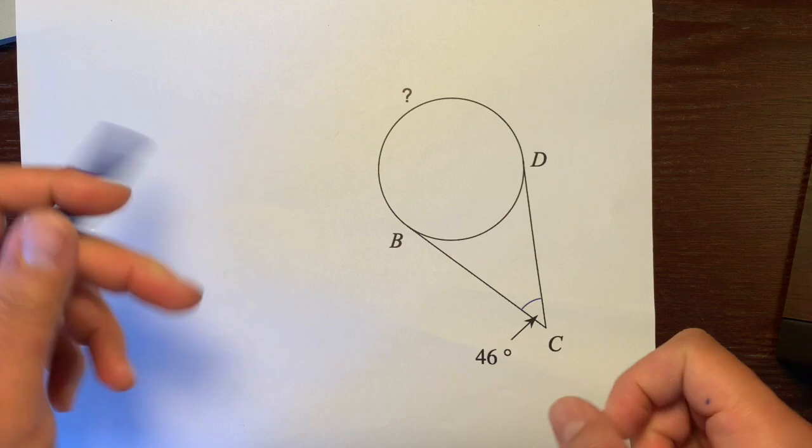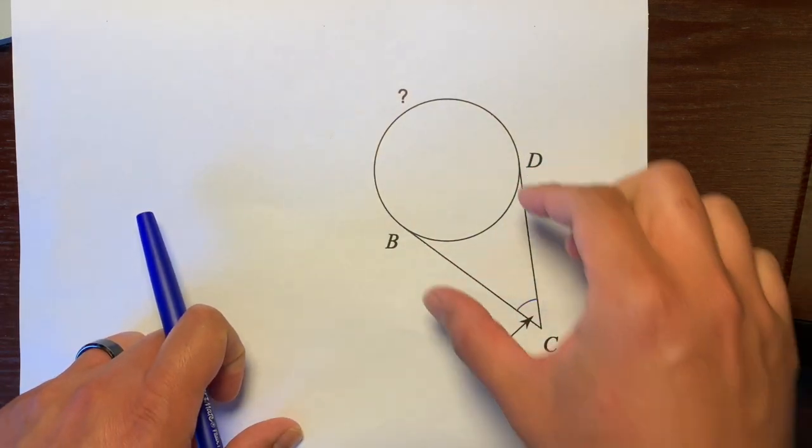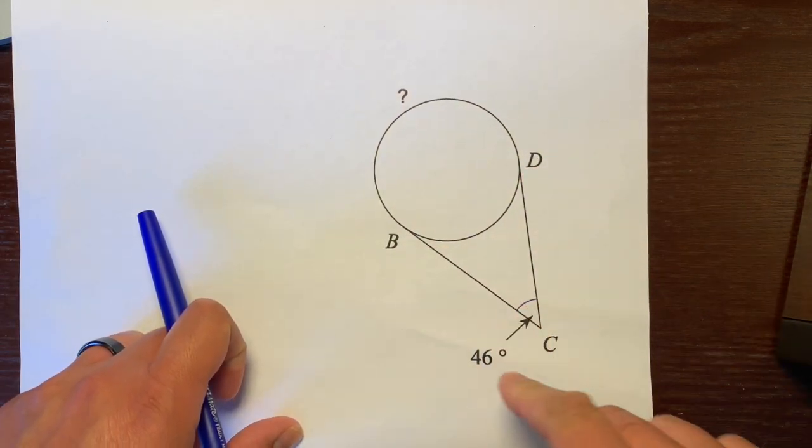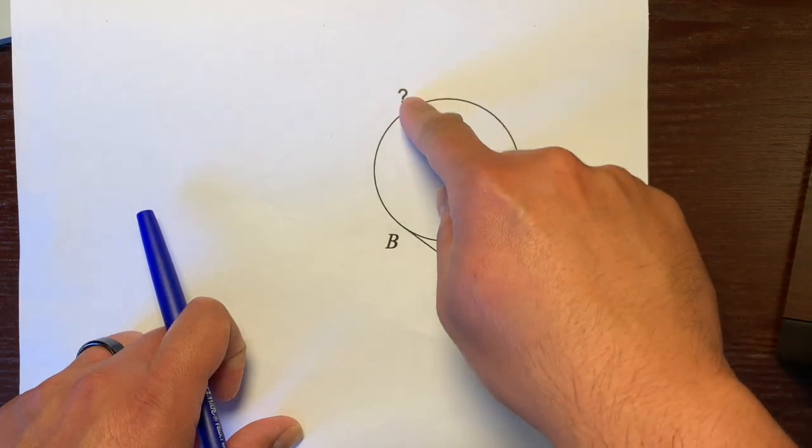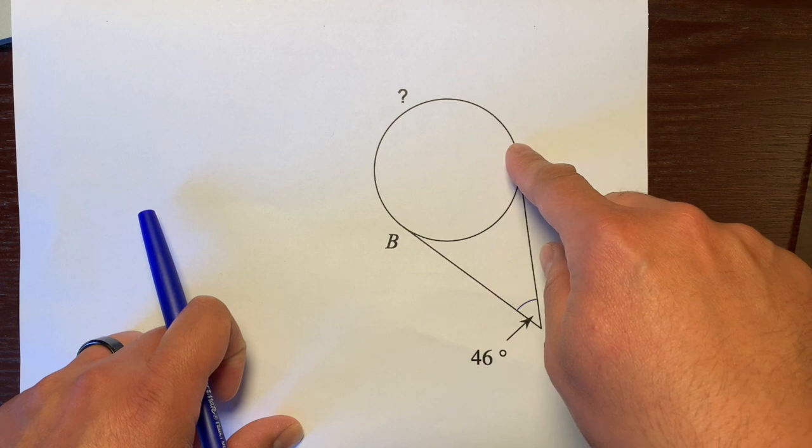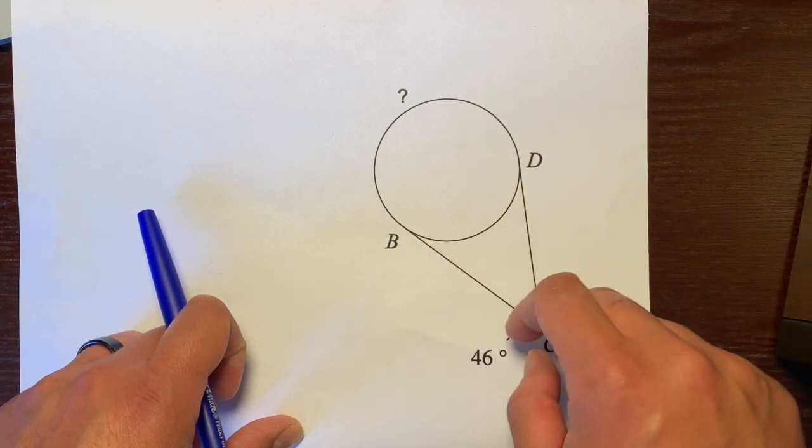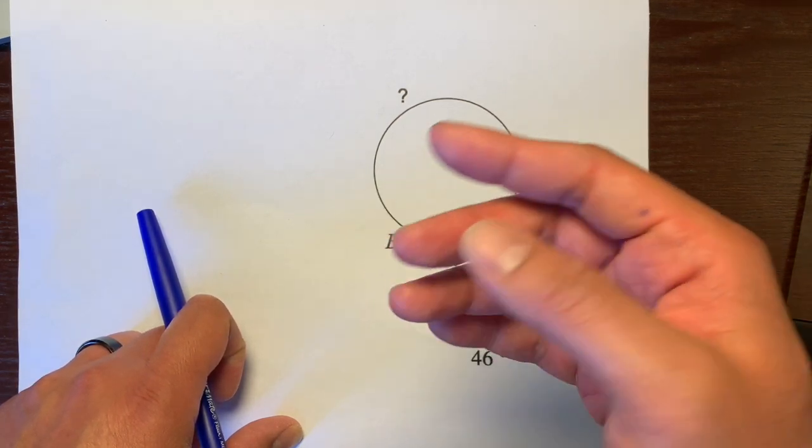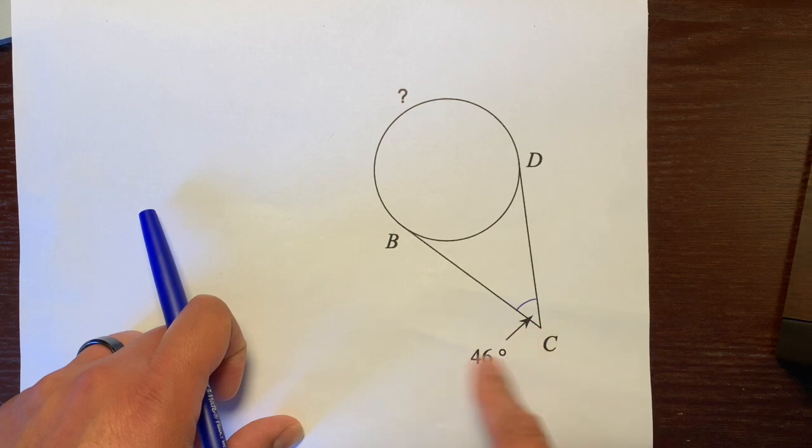We're going to look at this and figure this out. If you remember, when lines intersect on the outside, you take the far arc, the arc that's furthest away from that angle, subtract the near arc, divide it by 2, and set it equal to this 46.